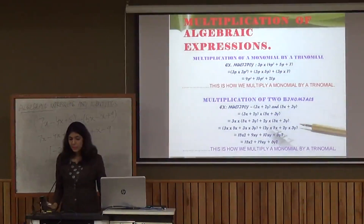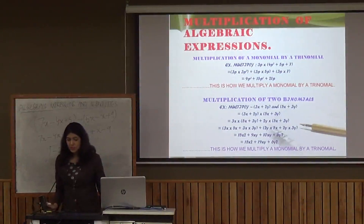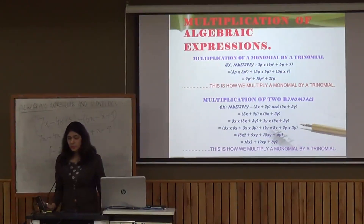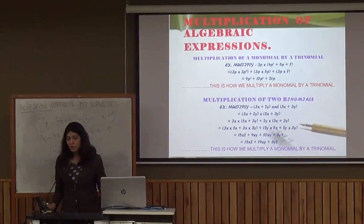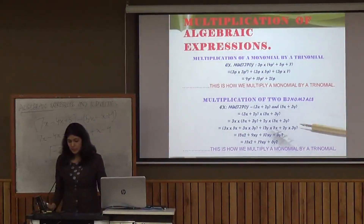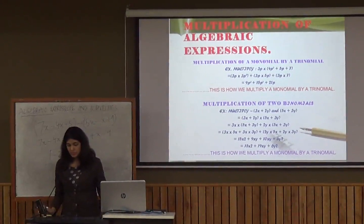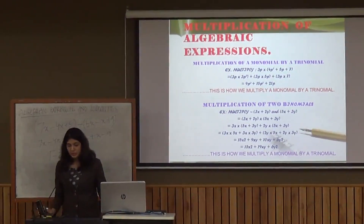Next is the multiplication of algebraic expressions. For multiplication of a monomial by a trinomial, when we multiply 3p with 4p square plus 5p plus 7, we multiply 3p with the first term, then 3p with the second term, then 3p with the third term. For multiplication of two binomials, multiplying 3x plus 2y and 5x plus 3y, we perform a similar method.